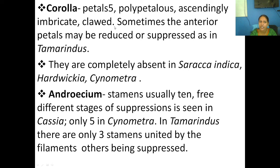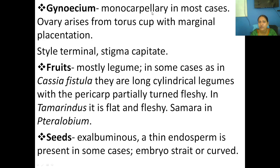The androecium has 10 stamens, but in Cassia only three fertile stamens are seen — this can vary depending on the plant. The gynoecium is monocarpellary with marginal placentation, and the fruit is a legume.